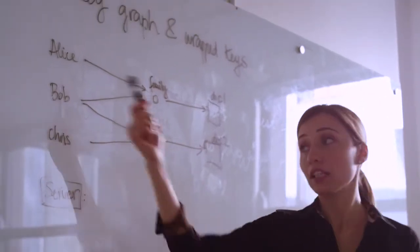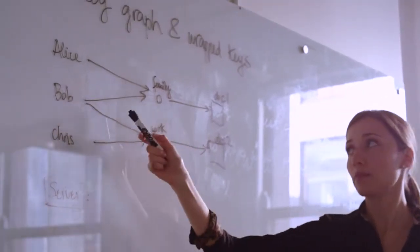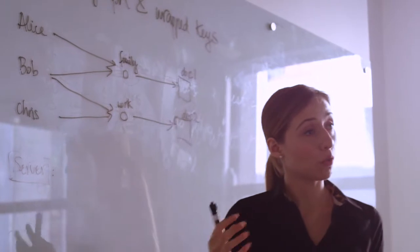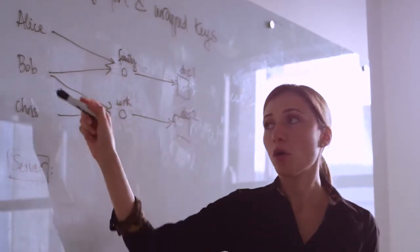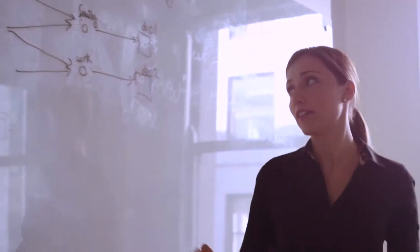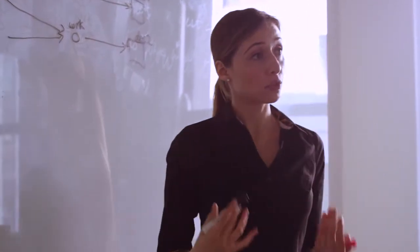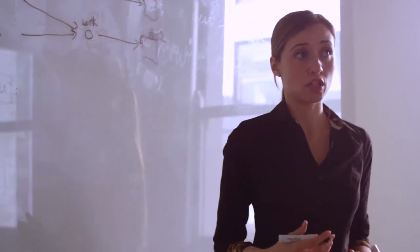Consider that we have three users: Alice, Bob and Chris. Alice and Bob have access to a folder called family that has some document. Then Bob and Chris work together and they have access to the folder work, which contains a document with sensitive information about their company.